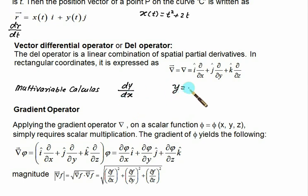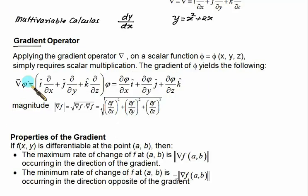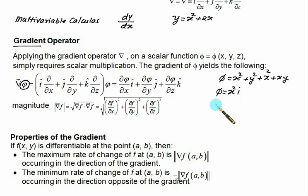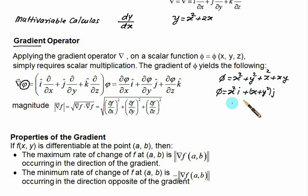Just as dy/dx gives the slope or gradient in one dimension — for example, if y = x² + 2x we differentiate with respect to x — similarly, the gradient operator is the three-dimensional equivalent. We have grad φ = i(∂/∂x) + j(∂/∂y) + k(∂/∂z) applied to φ, giving ∂φ/∂x·i + ∂φ/∂y·j + ∂φ/∂z·k. Here φ is a scalar function — it should not contain i, j, k terms, only variables like x² + y² + z². If it contains i, j, k it is a vector-valued function. The gradient definition is only applicable to scalar functions.